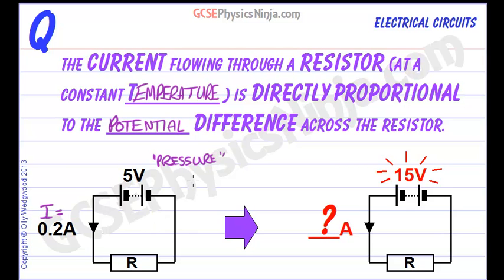Well it's three times the voltage, so therefore it will be three times the current, and we would have 0.6 amps of current.